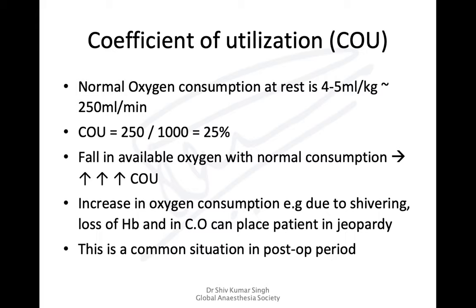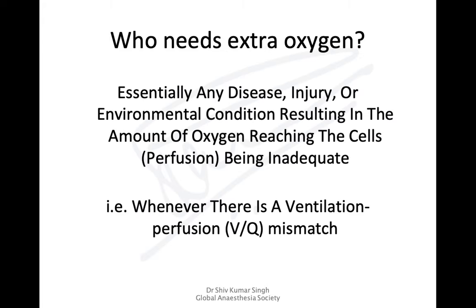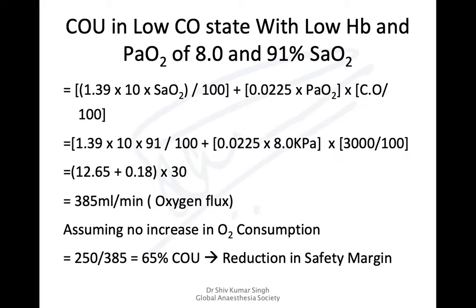The ratio of consumption to availability is called the coefficient of utilization, also known as oxygen delivery (DO2), which is around 25 percent. If available oxygen is reduced with normal consumption, the coefficient of utilization increases. Increases in oxygen consumption occur commonly — for example, when a patient is shivering, oxygen requirement goes up by almost 300 percent. Other causes include a drop in hemoglobin after surgery or anesthetic agents reducing cardiac output.